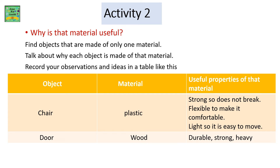Activity 2: Why is that material useful? Find objects that are made of only one material. Talk about why each object is made of that material. Record your observations and ideas in a table like this: Object — chair, door; Material — plastic, wood. Useful properties of that material: strong so does not break, flexible to make it comfortable, light so it is easy to move, durable, strong, heavy.